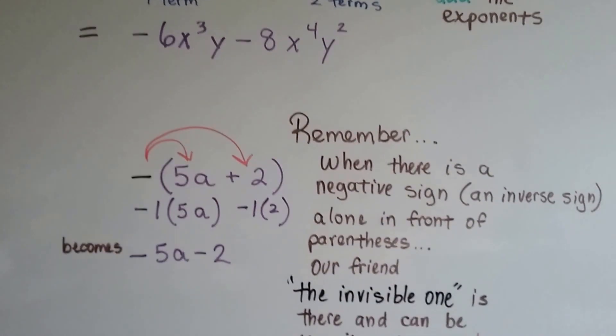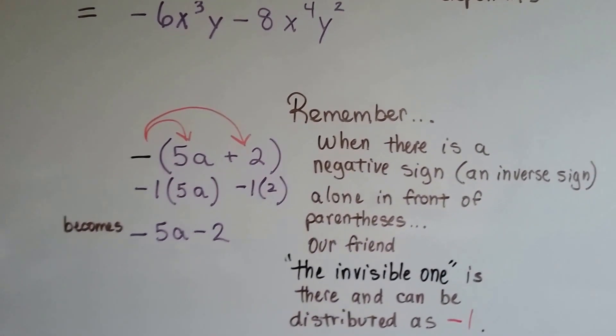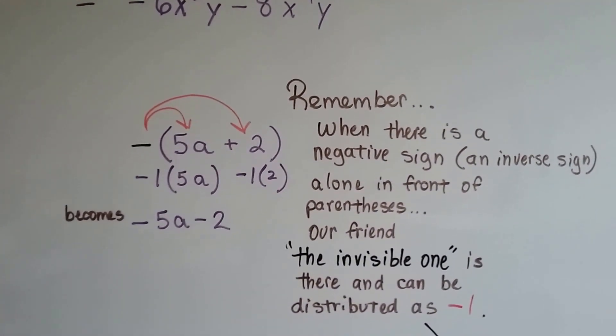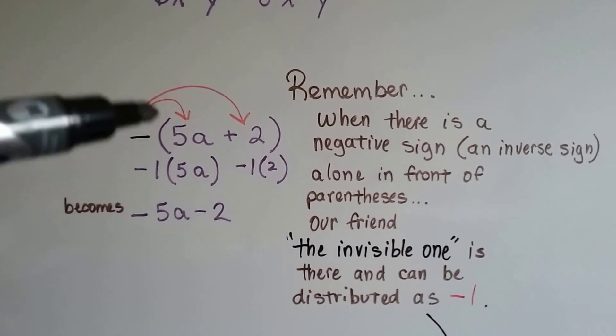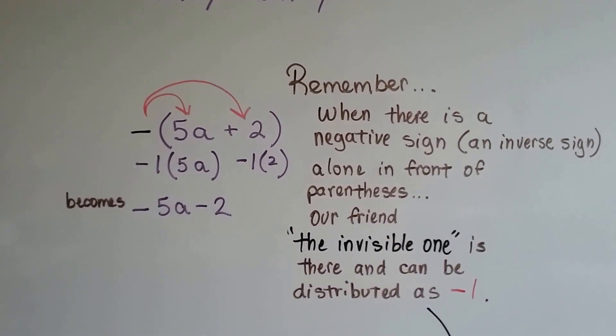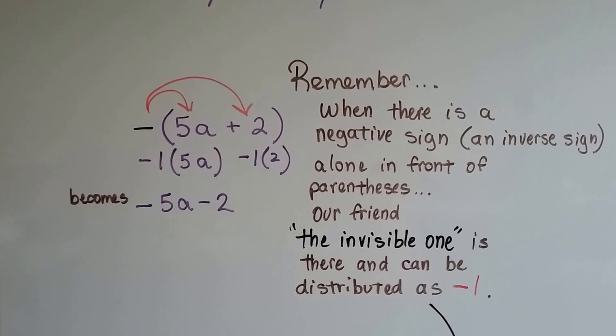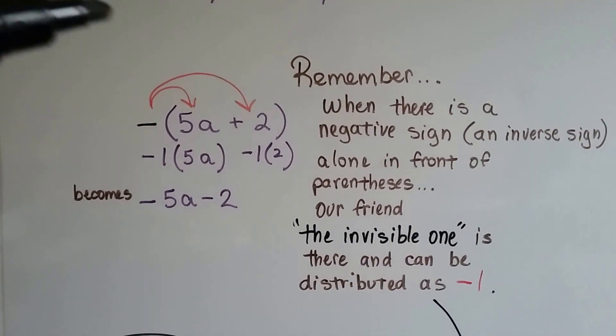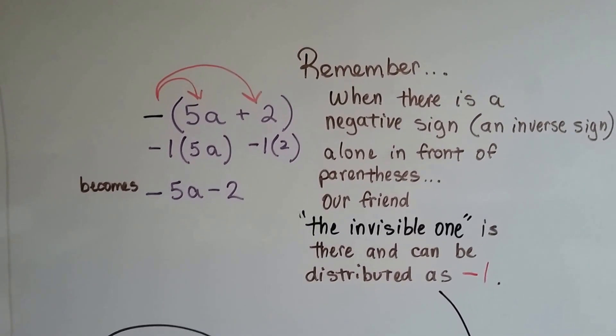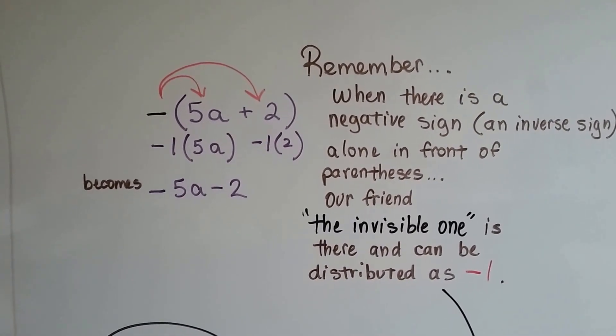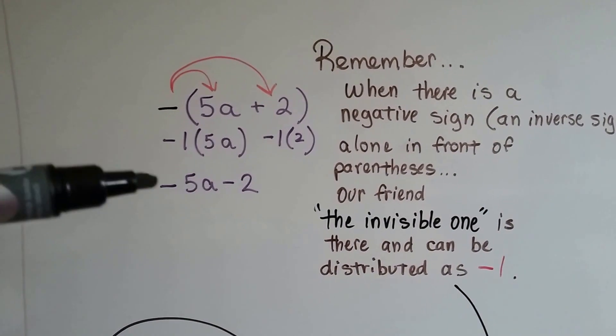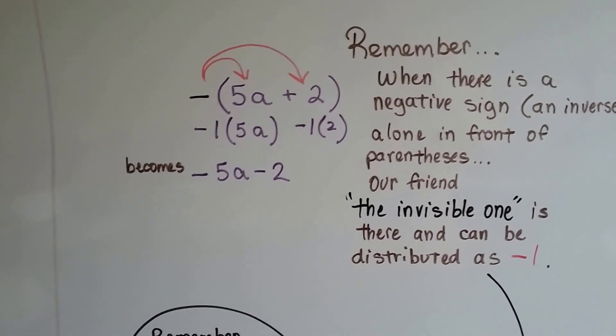And remember, when there's a negative sign and inverse sign alone in front of parentheses, our friend the invisible one is hiding in front of there. And it can be distributed as a negative one. So this negative times the 5a would be negative 5a. And negative times a positive 2 would be negative 2. So this would end up becoming negative 5a minus 2.